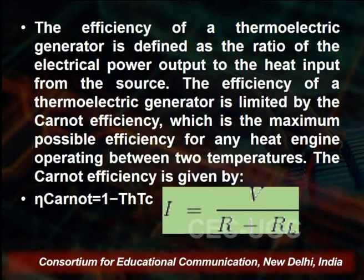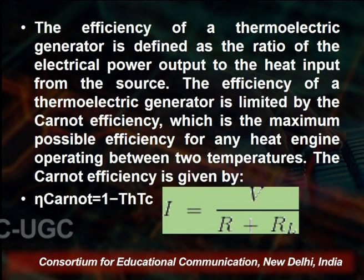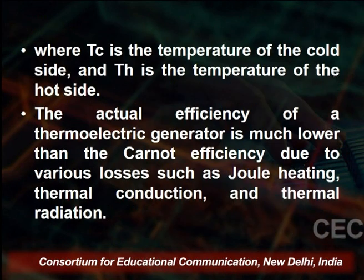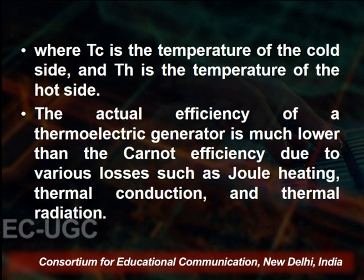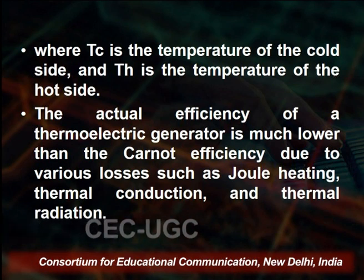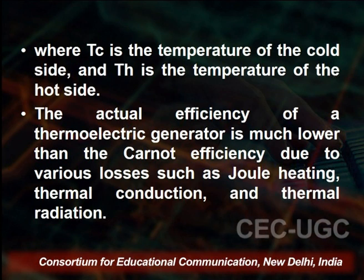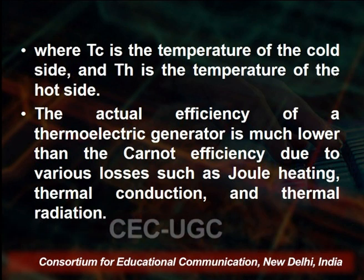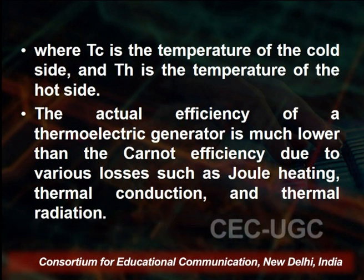The Carnot efficiency is given by η = 1 - T_C / T_H, and the current is I = V / (R + R_L), where T_C is the temperature of the cold side and T_H is the temperature of the hot side. The actual efficiency of the thermoelectric generator is much lower than the Carnot efficiency because of various losses such as Joule heating, thermal conduction, and thermal radiation.